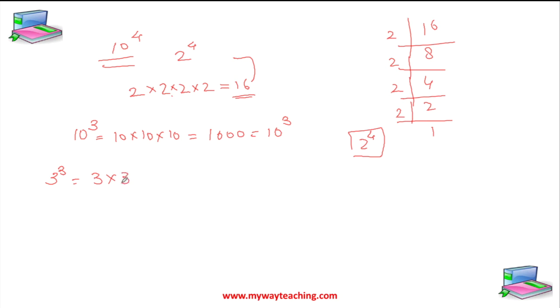that means 3 multiplied 3 times. So 3 times 3 is 27. So 27, either you can write 3 to the 3 or 27.